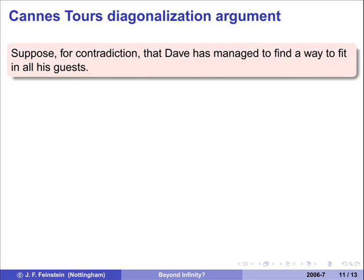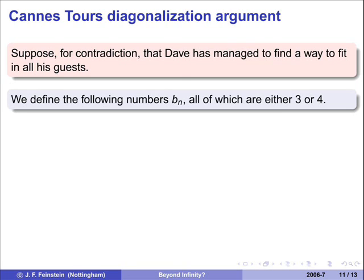Suppose for contradiction — I'm going to deduce something ridiculous from this — that Dave has managed to find a way to fit them all in. Now I'm going to define a sequence bn, and from this sequence I'm going to define a real number which will give me a contradiction, which will show that this couldn't have been done after all. I'm going to define a sequence of numbers bn which are either 3 or 4, defined in terms of how you fitted the guests in.